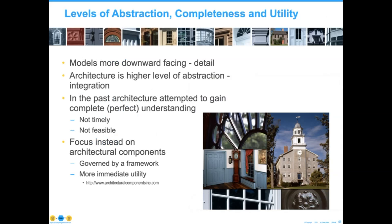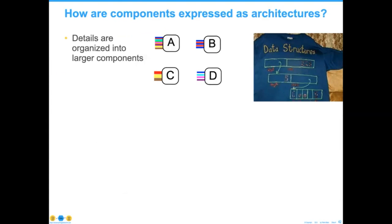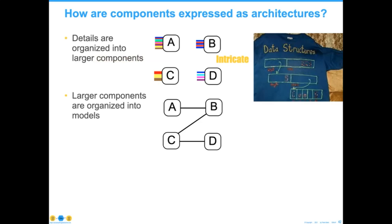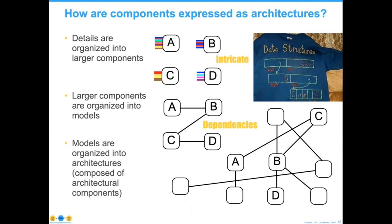The models are facing downward. The architecture is the high level of abstraction. The components in data models are linked together in a number of different ways. The details are organized into larger components — this is intricate and detailed, unfortunately not the stuff most people want to talk about. We organize those components into models, and that adds dependencies. The minute you say something is related to something else or must be related to something else, you are creating a series of dependencies. Those conditions must be met for the system to work.